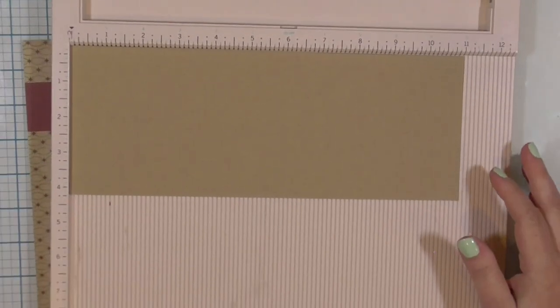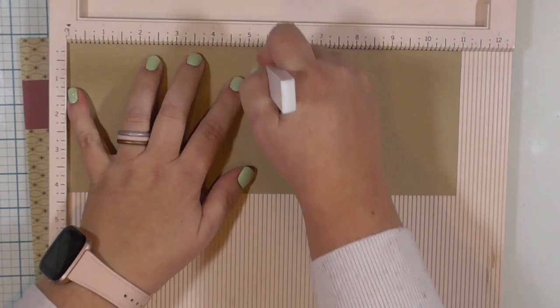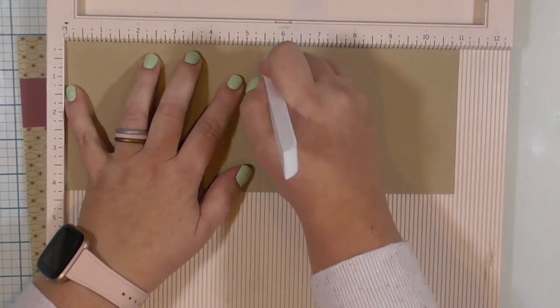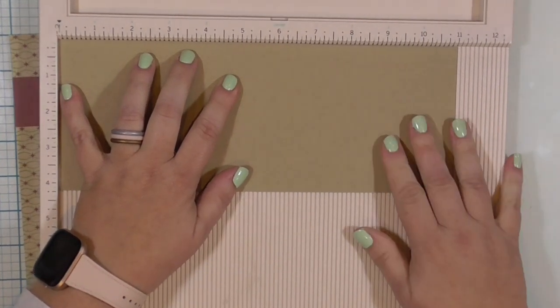So to start with, I need to create my card base. I have this craft color cardstock. It is four and one quarter inches wide by 11 inches long. I'm going to score that in the middle at five and a half to create a top folding A2 size, or U.S. A2 size card.